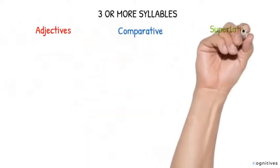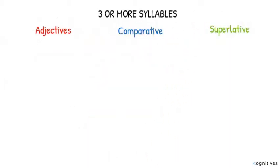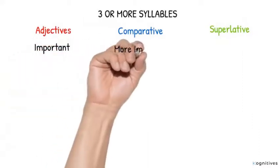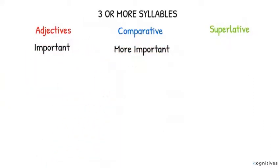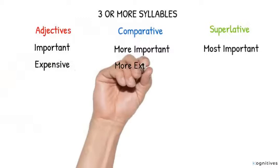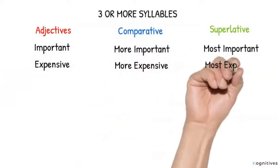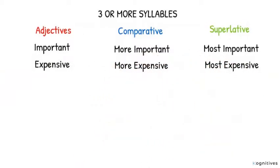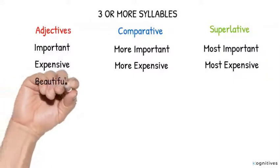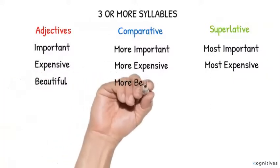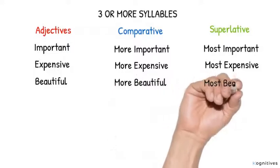Now let's look at three or more syllables. Adjectives, comparative, superlative. Number one: Important, more important, most important. Number two: Expensive, more expensive, most expensive. Three: Beautiful, more beautiful, most beautiful.